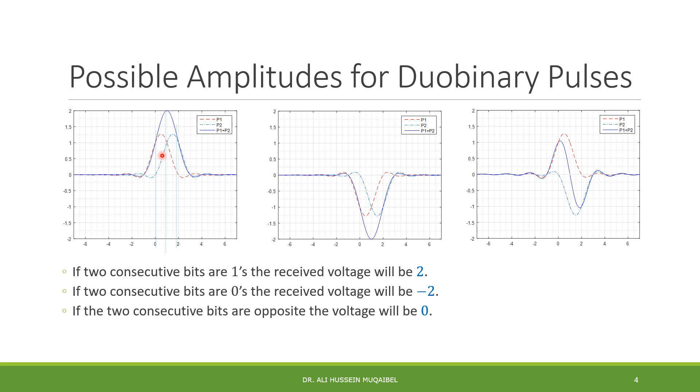So we can summarize this. If two consecutive bits are 1s, the received voltage will be 2. If you have two consecutive zeros, the received voltage will be minus 2. And if we have 1 and then minus 1, opposite polarity, whether 0 and then 1 or 1 and then 0, the voltage will be 0. So the possible amplitudes are 2, minus 2, and 0. Other than the edge, the first bit will start with 1, and the last bit could be 1 or minus 1 as well. But all the bits in the middle will be either the voltages, either 2 or minus 2 or 0.